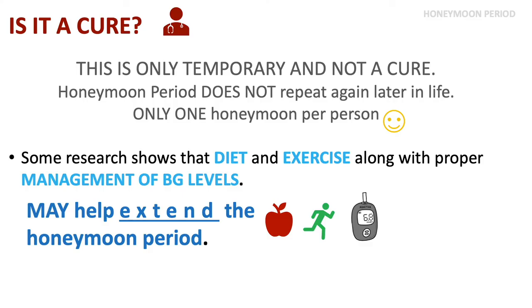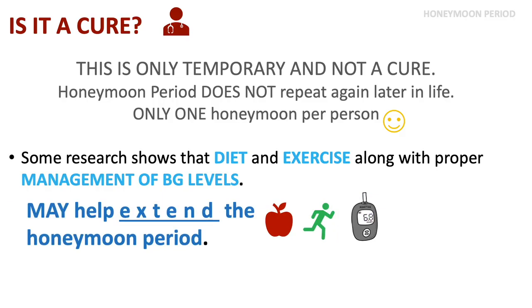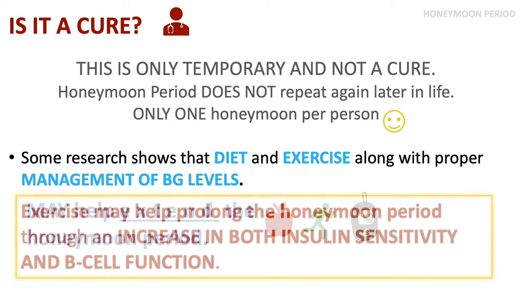Research has shown that those with type 1 diabetes undertaking high levels of physical exercise can help extend the honeymoon period compared to those with a more sedentary lifestyle. It is proposed that exercise prolongs the honeymoon period by increasing both insulin sensitivity and beta cell function.